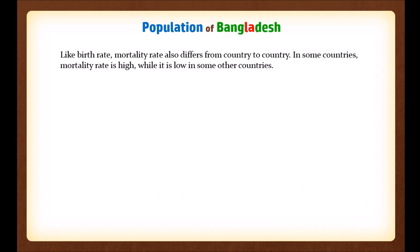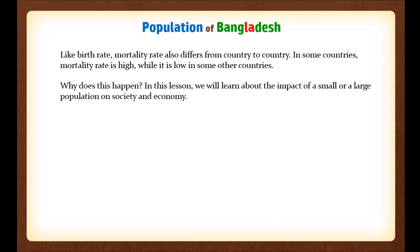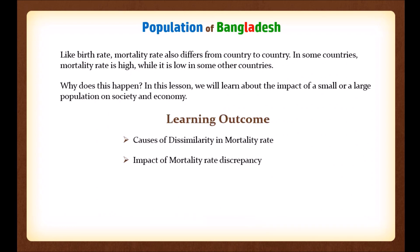Like birth rate, mortality rate also differs from country to country. In some countries mortality rate is high while it is low in some other countries. Why does this happen? In this lesson we will learn about the impact of a small or large population on society and economy. The learning outcomes will be: causes of dissimilarity in mortality rate, and impact of mortality rate discrepancy.